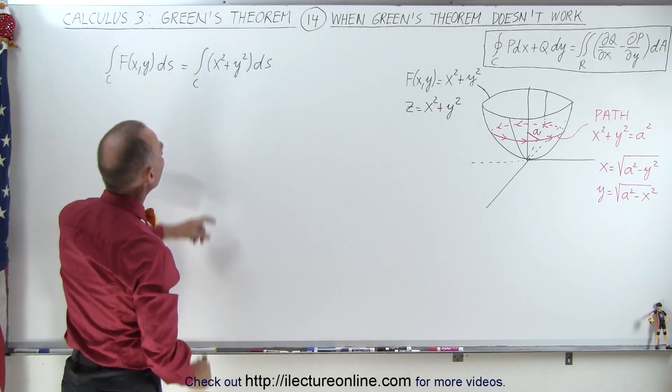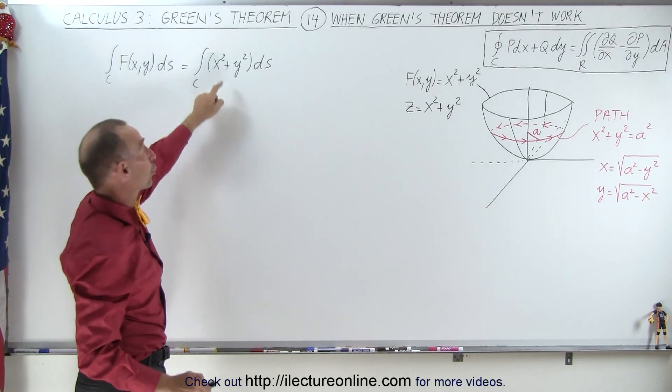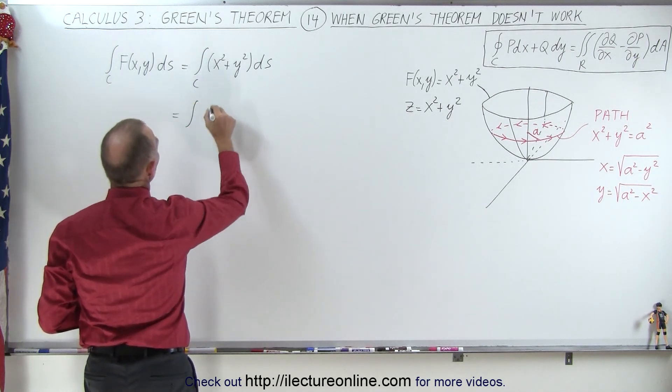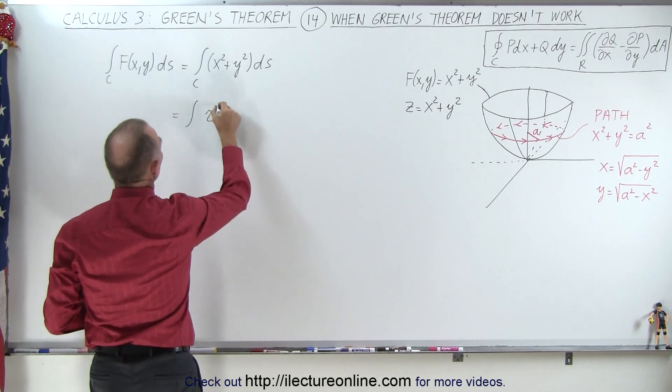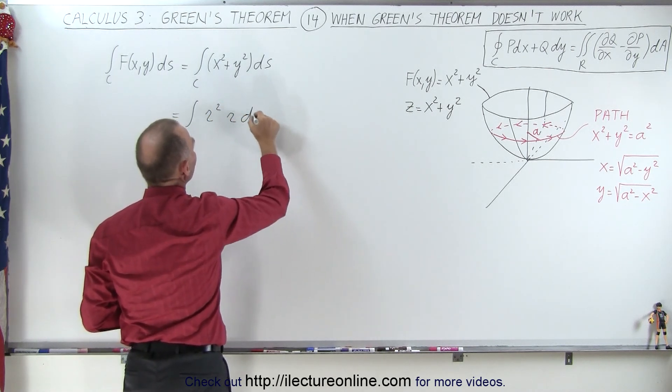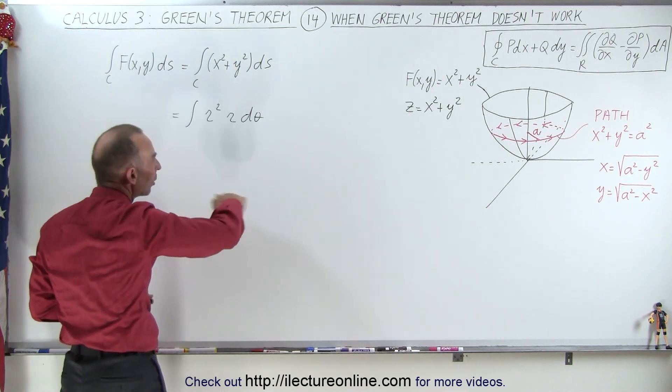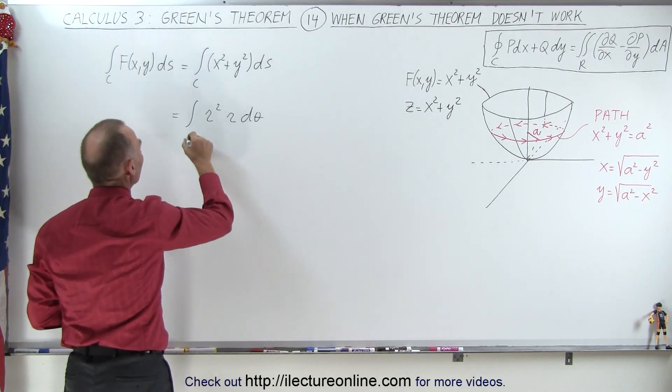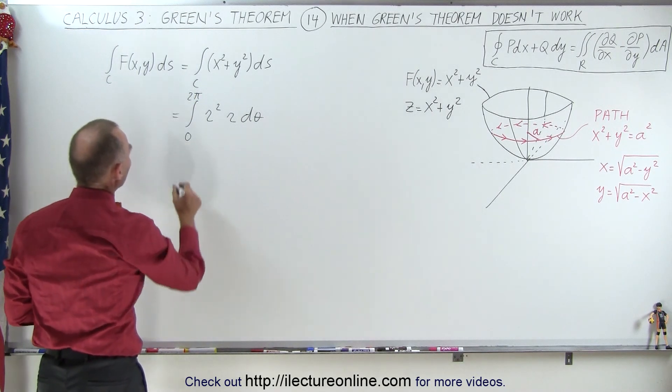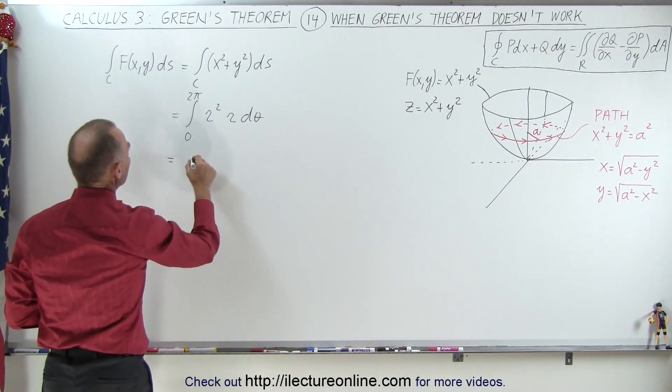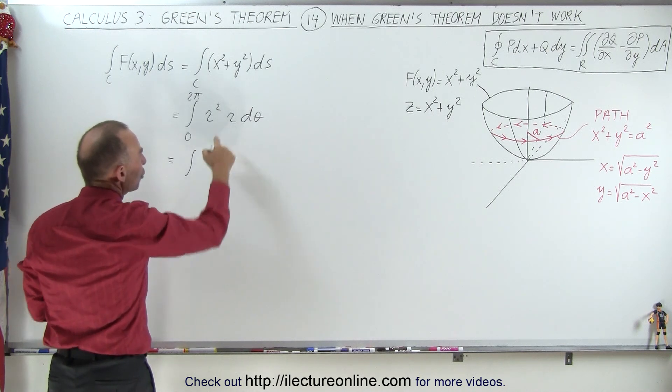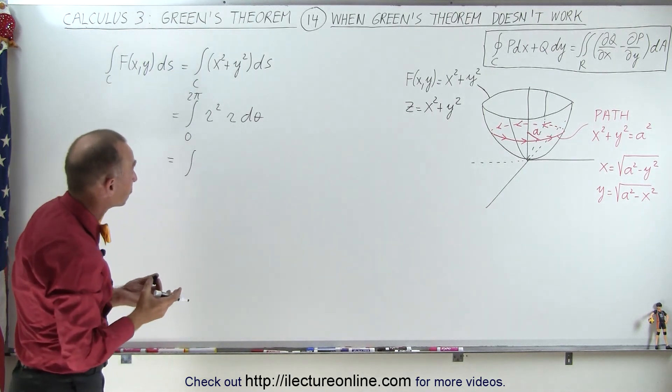If we evaluate that, notice we can probably do better by changing this to polar coordinates. So this can be written as the integral over r squared. Instead of ds we write r times d theta, and we're going to integrate along the circular path from 0 to 2 pi.